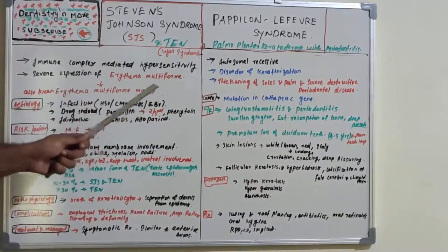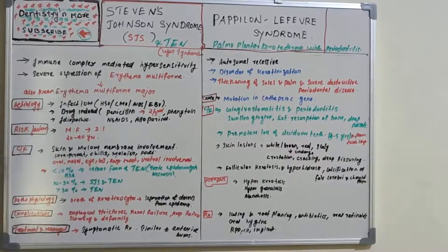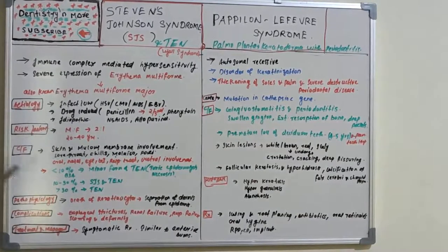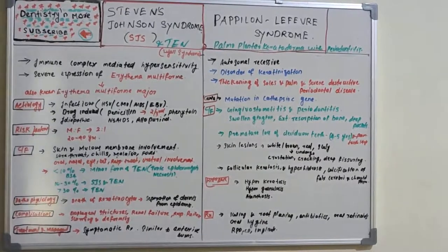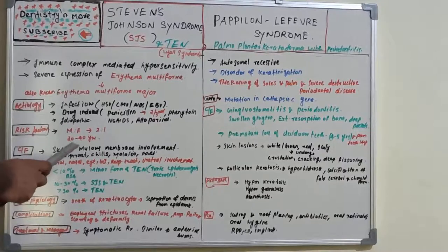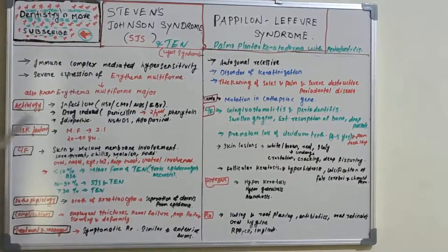Risk factors include male sex — with a 2:1 male-to-female ratio — and age, most commonly affecting people between 20 and 40 years. Clinical features involve the skin and mucous membranes: oral, nasal, eye, gastrointestinal, respiratory, and urethral surfaces are all involved. Associated symptoms include sore throat, chills, malaise, and fever.